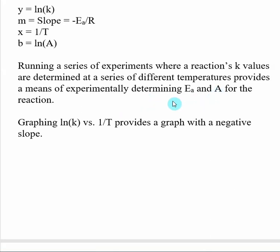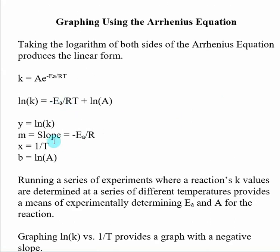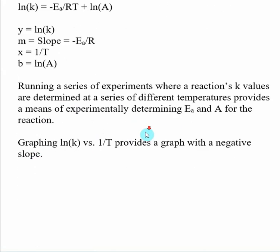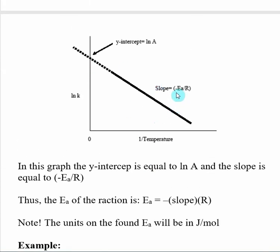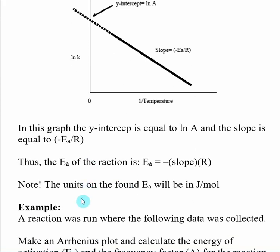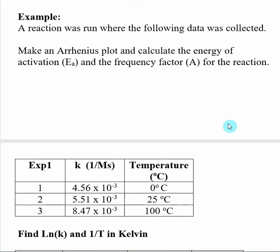Sometimes A is not quite so important, but we'll look at it anyway. When you graph the natural log of the K values versus one over T, you get a slope of negative energy of activation divided by R. The graph should have a negative slope, and your y-intercept is going to be the natural log of A. Remember that the energy of activation units are going to be in joules per mole, because we're using the gas constant R where the units on energy are joules per mole. Here are some basic numbers so you can do the plot and make sure you're doing it correctly.